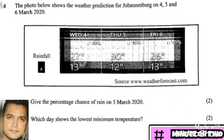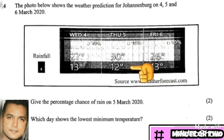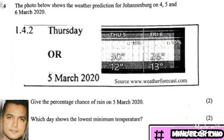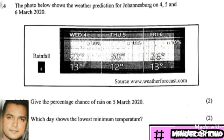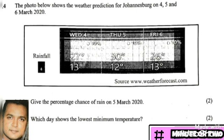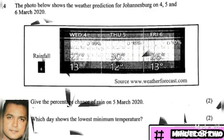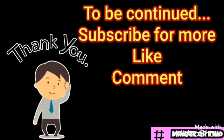Question 1.4.2 asks: which day shows the lowest minimum temperature? Minimum refers to the smaller temperature value. Looking at each day, Thursday the 5th of March shows a minimum of 12 degrees, which is the lowest. However, be careful — the question asks for the day, not the temperature. In exam conditions, learners may rush and write 12 degrees. The correct answer is Thursday, 5th March 2020.